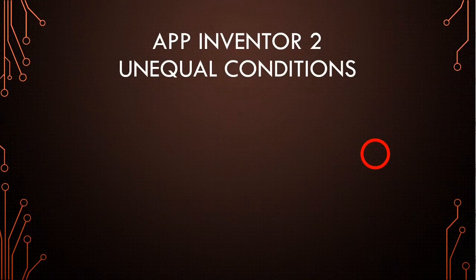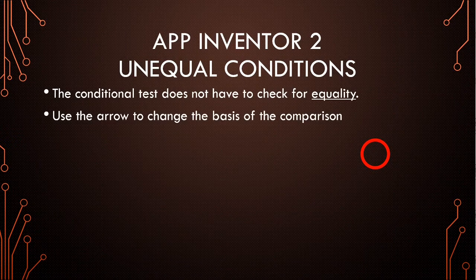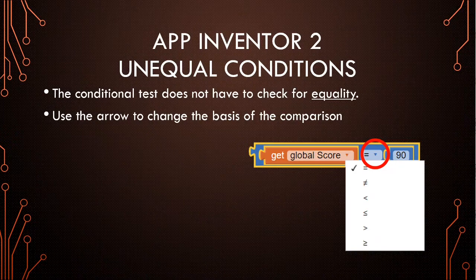You should have noticed in that last example that the conditional test doesn't have to check for equality — it can also check for other things. The basic configuration of the block in App Inventor is the equals. You drag that out, then click the little down arrow and you can pick from the variants: not equals, less than, less than or equal to, greater than, and greater than or equal to.